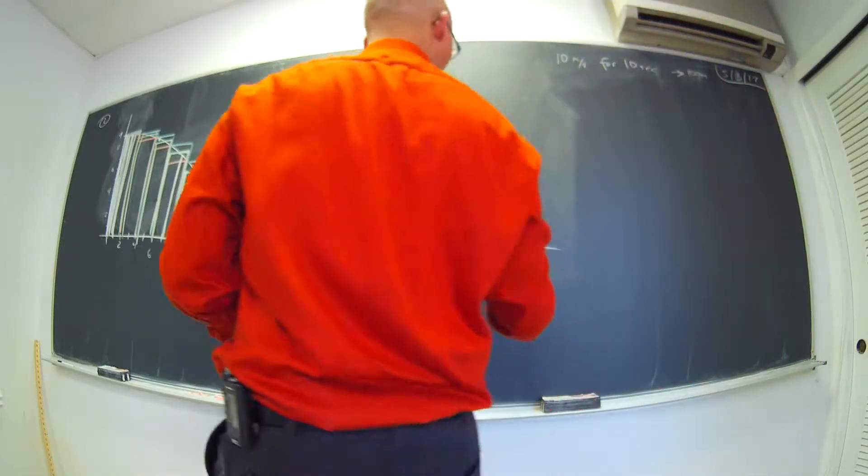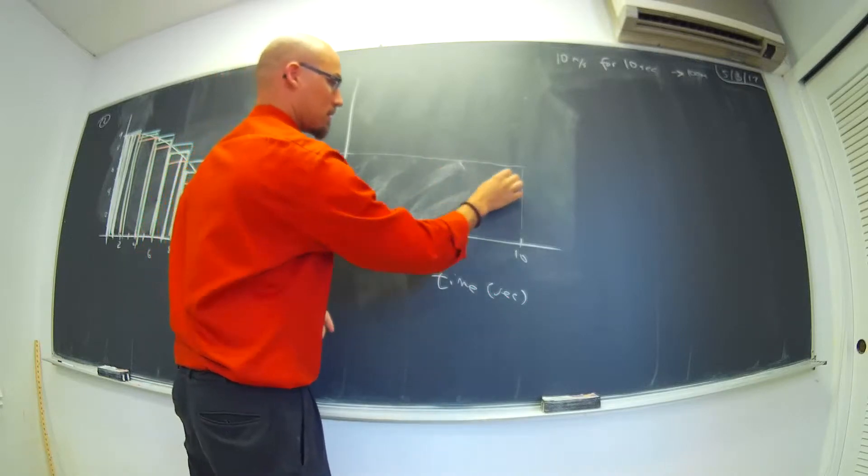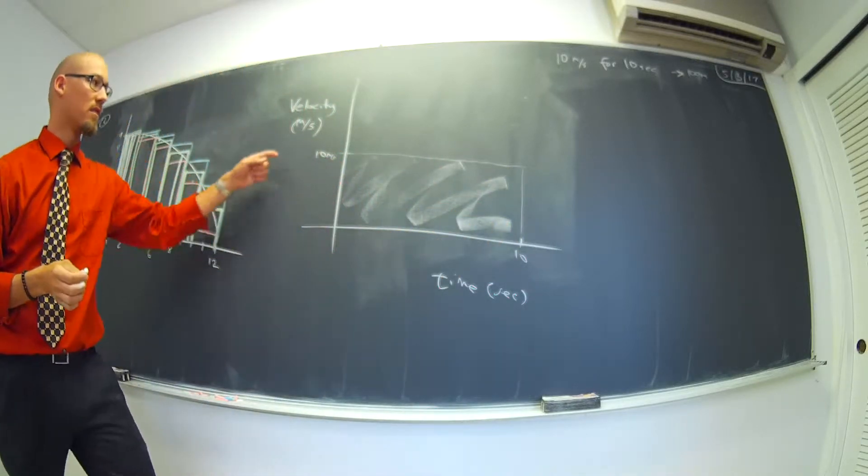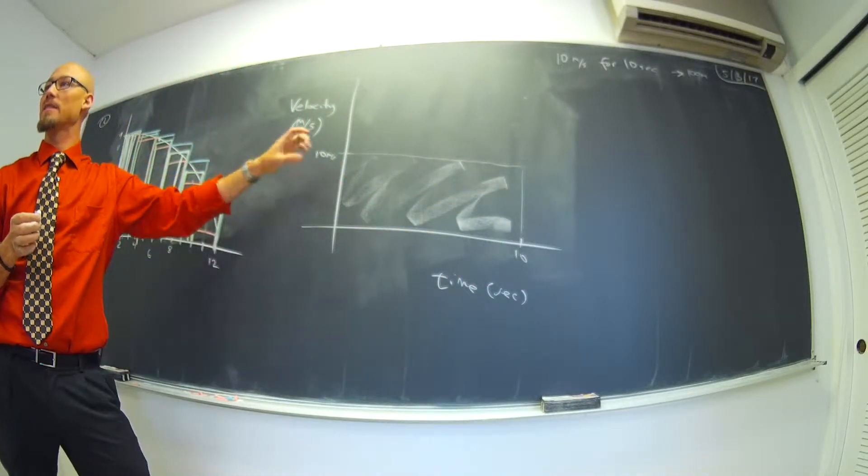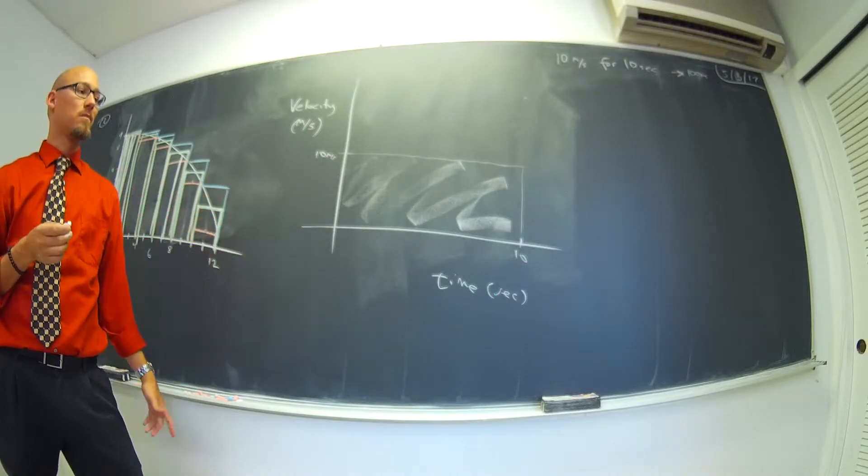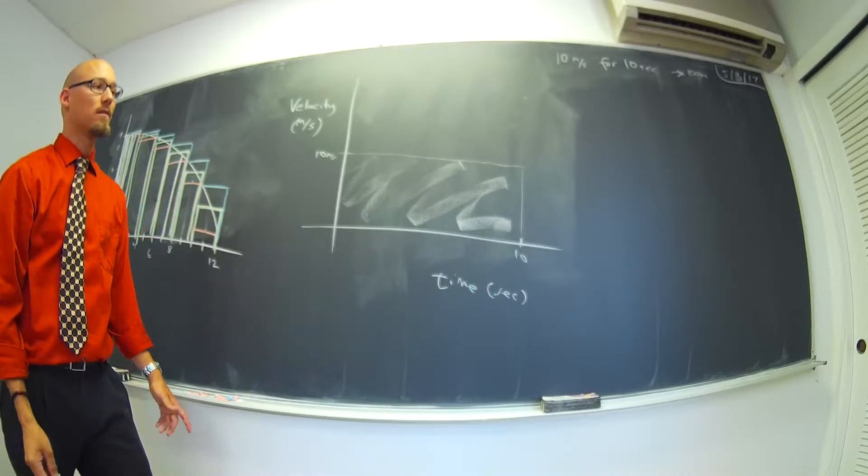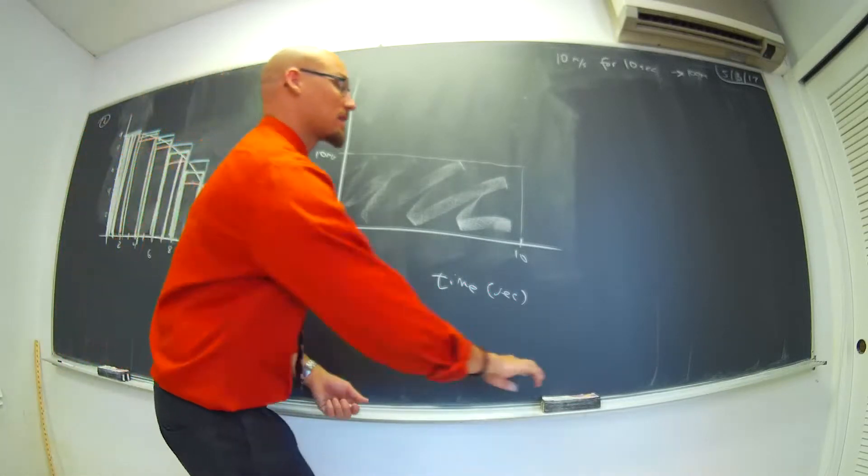Right? So, check it out. 100 meters is the area under the velocity curve. The area under the velocity curve is the distance that you traveled. And you can look at that and say, well, that was easy because it's a rectangle. Yeah, what if the velocity is changing?